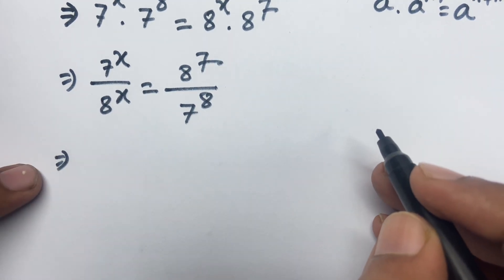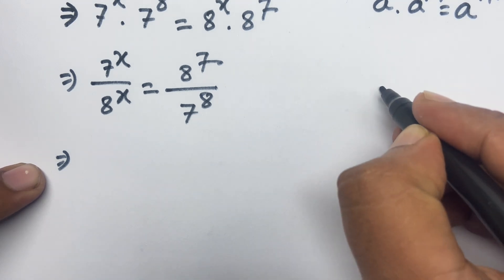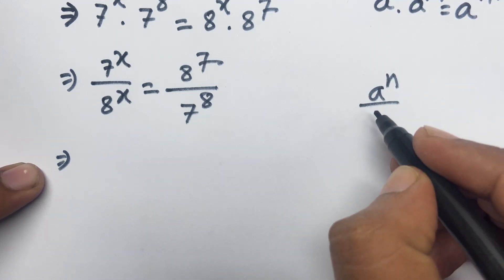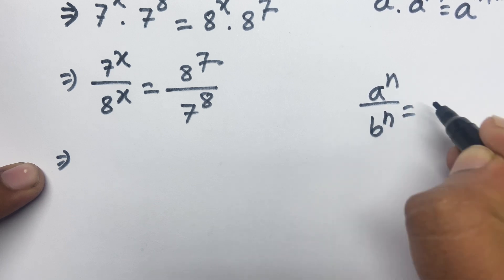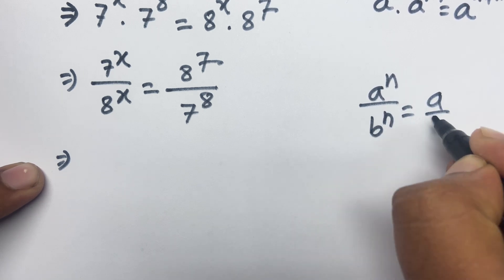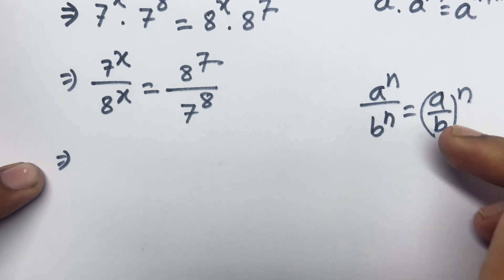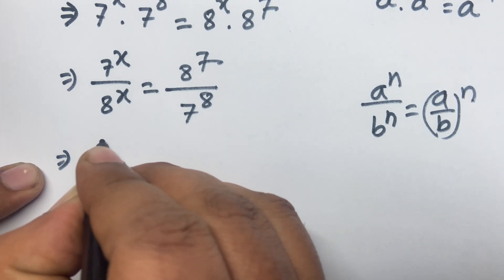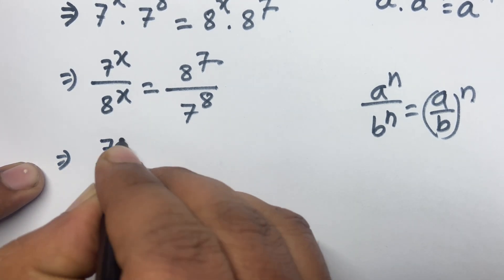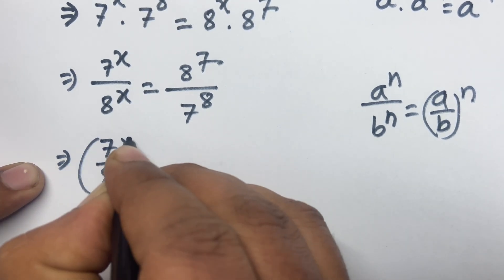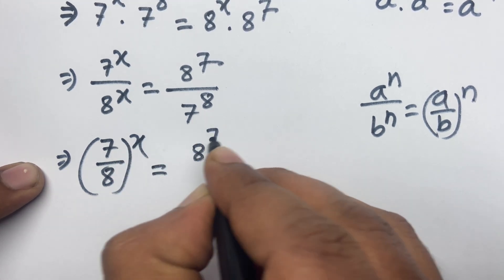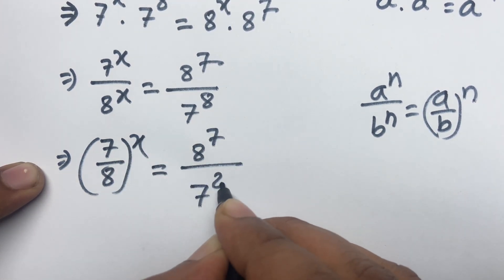According to exponential rules, we know that a to the power n over b to the power n equals a over b, all to the power n. Following this formula, I can write 7 over 8, to the power x, equal to 8 to the power 7 over 7 to the power 8.